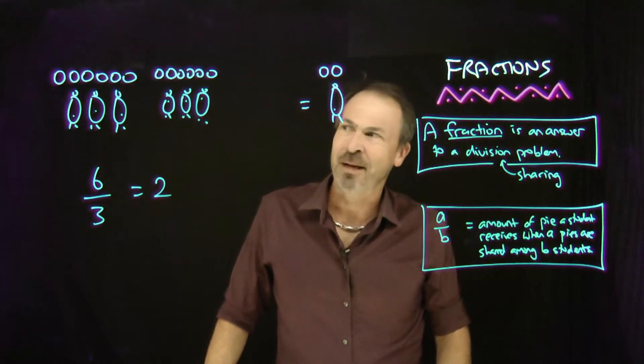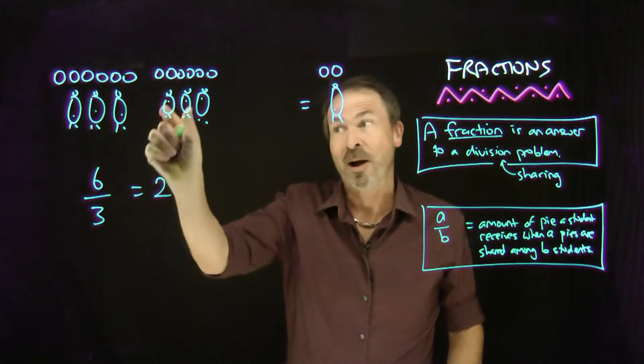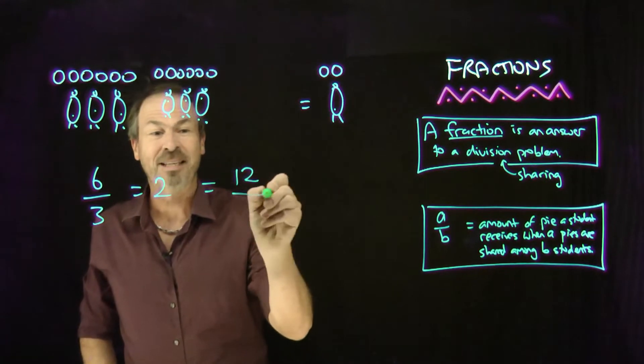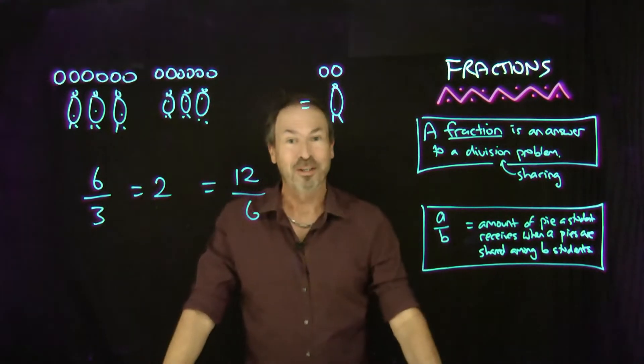How much pie per student is that? Well actually, you look at this and say, well, really nothing's changed. It was two pies per student here, it's also two pies per student there. If I double the number of pies and I double the number of students, that fraction is still two pies per student. It's the same quantity.